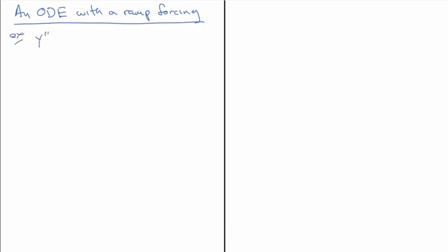In this video, I'm going to solve an ODE with a ramp forcing. We have an ODE: y double prime plus 4y equals — and here I'm going to write it in Heaviside notation — u₅(t) times (1/5)(t minus 5) minus u₁₀(t) times (1/5)(t minus 10).